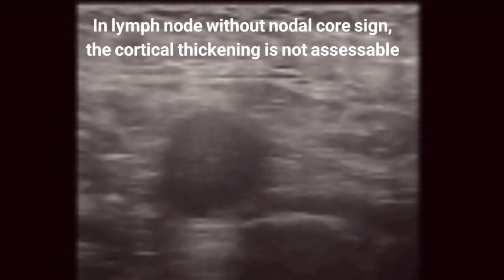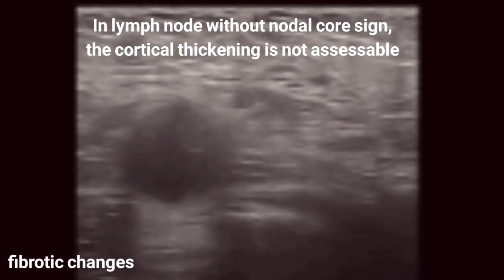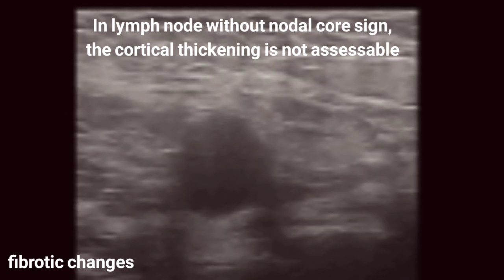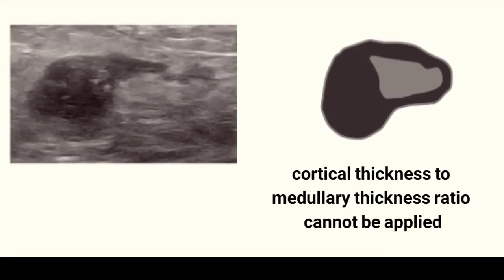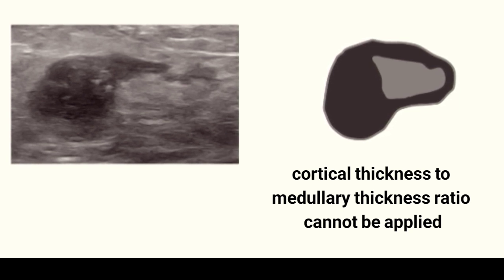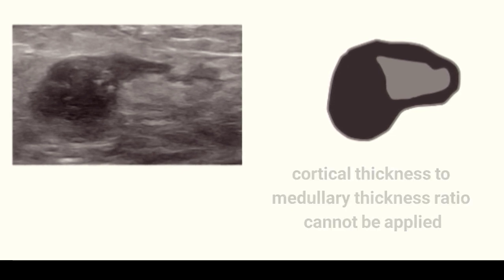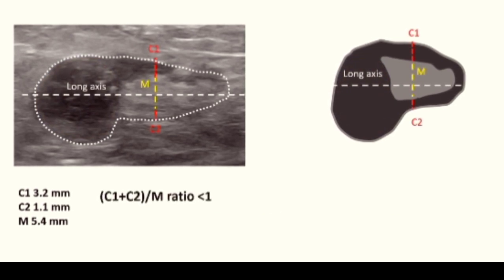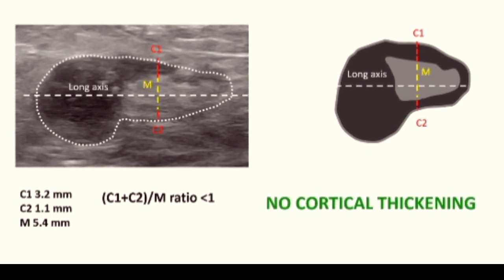The presence of the hilar sign is necessary for the measurement and definition of cortical thickening. In the case of a lymph node with fibrotic changes, the medulla is absent, so we can't assess the cortical thickening. In cases where the cortical thickness to medullary thickness ratio does not involve the maximum cortical thickening, the ratio can't be applied. For example, in this lymph node with clear focal thickening, the C:M ratio is less than one, which would make us consider the lymph node as having no cortical thickening.